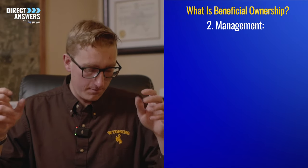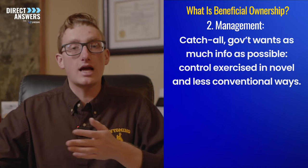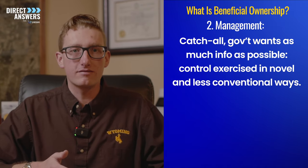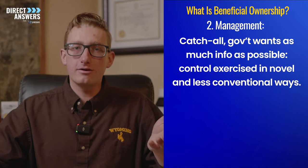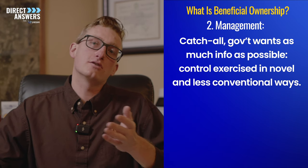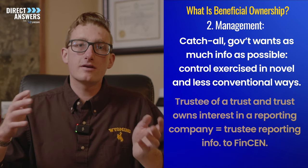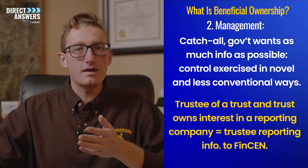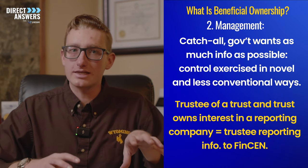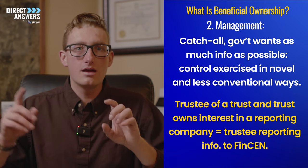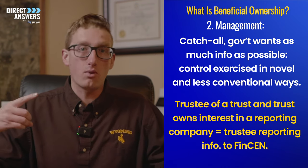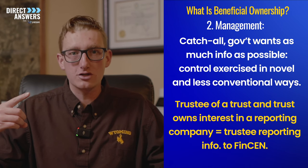Lastly comes the catch-all provision. In this catch-all provision, substantial control can be control exercised in novel and less conventional ways. An example of this can be the trustee of a trust. If there's a trustee of a trust and that trust owns an interest in a reporting company, then that trustee would need to report their information to FinCEN.